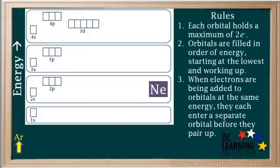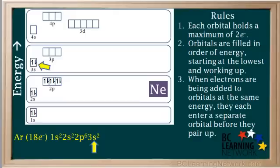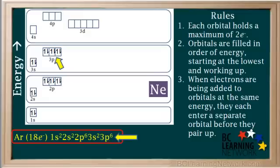The next element we'll do is argon. It has 18 electrons. So we start with 1s2, 2s2, 2p6, and 3s2. This accounts for a total of 12 electrons, so we have 6 more to add. These 6 electrons will go into the 3 3p orbitals as shown here. So the configuration of argon is 1s2, 2s2, 2p6, 3s2, 3p6.